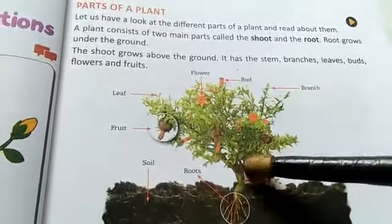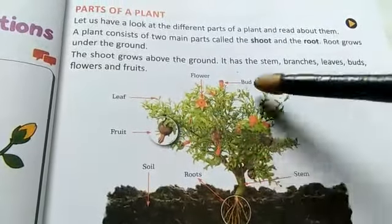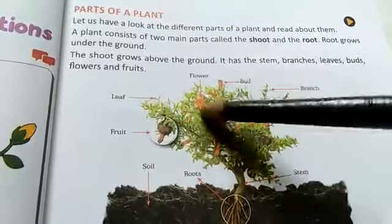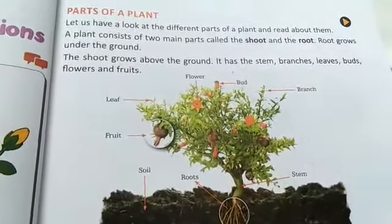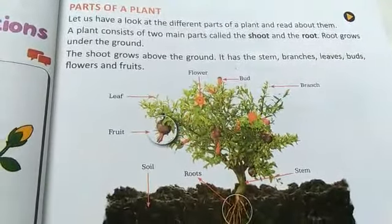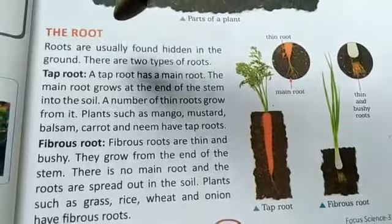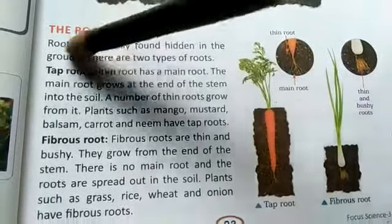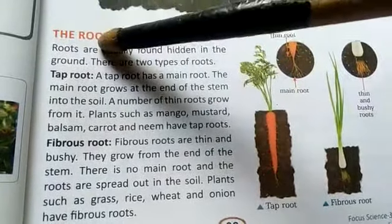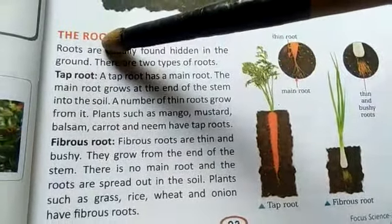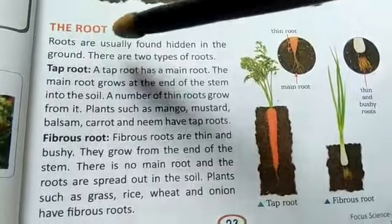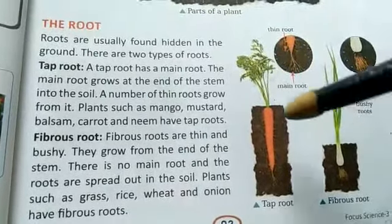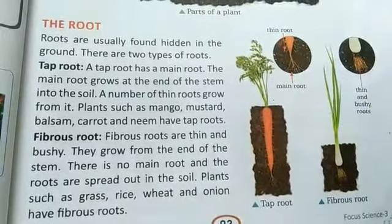In the shoot we can find the stem, branches, leaves, buds, flowers, and fruit. As you can see in the figure, the root is below and the shoot is above. You can see different types of leaves, fruit, and flowers in this diagram. Now we will discuss the root.